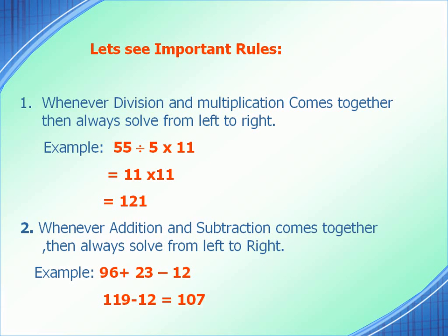Now look at the second point. It says whenever addition and subtraction comes together, then always solve from left to right. For example, 96 + 23 - 12 is not 96 + 11, but rather 119 - 12 = 107, because going from left to right you get to addition first.